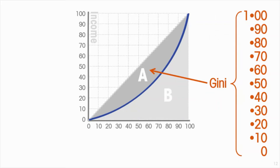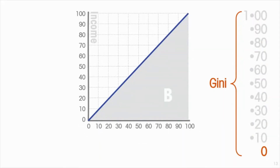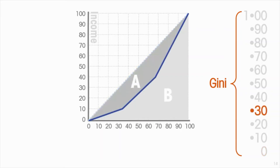The Gini coefficient varies from zero to one. In the extreme case of perfect equality — where every household earns exactly the same — say 73 percent of the households earn 73 percent of national income, so the Lorenz curve is coincident with the diagonal. Area A collapses and the Gini coefficient is zero. In our three-household example we'd get a Gini coefficient of around 0.3.